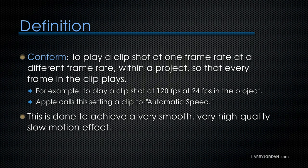Conforming a clip means to play a clip shot at one frame rate at a different frame rate within a project, so that every frame in the original clip plays. For example, to play a clip shot at 120 frames per second at 24 frames per second in a project. Apple calls this setting an automatic speed setting. This is done to achieve a very smooth, very high quality slow motion effect. We shoot at a faster frame rate and play back at a lower frame rate, which gives us automatic slow motion with really high quality and no stutter or choppiness.